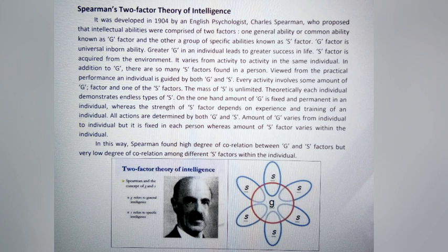Spearman's two-factor theory of intelligence was developed in 1904 by English psychologist Charles Spearman, who proposed that intellectual abilities were comprised of two factors: General Ability or Common Ability, known as the G-Factor, and a group of specific abilities known as the S-Factor.